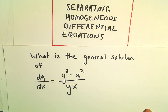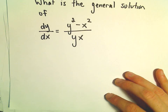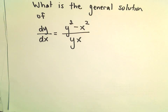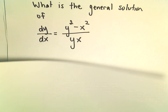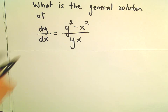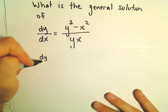Here we're going to look at solving a homogeneous differential equation by doing a change of variable. The first thing I'm going to do is make sure that we do have a homogeneous differential equation. We've got dy over dx equals y squared minus x squared over y times x.